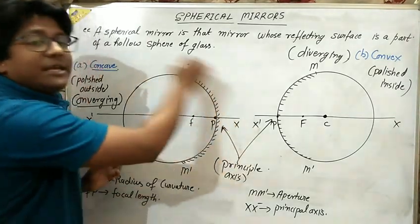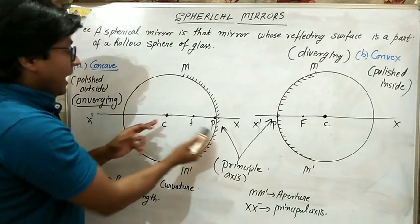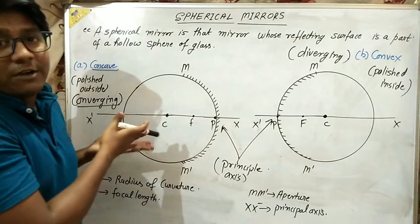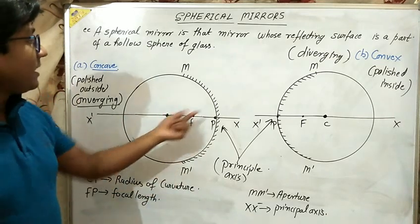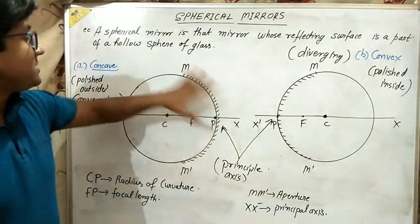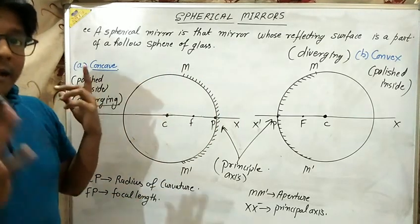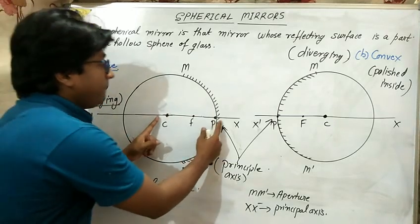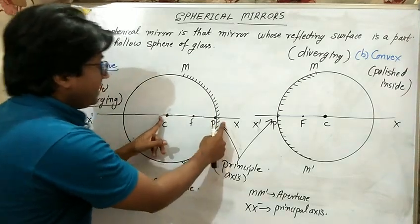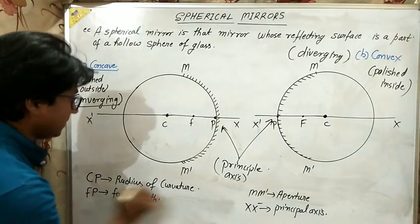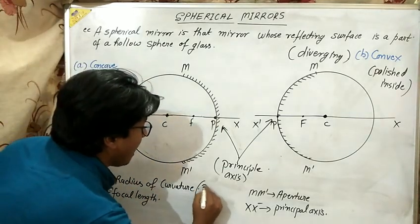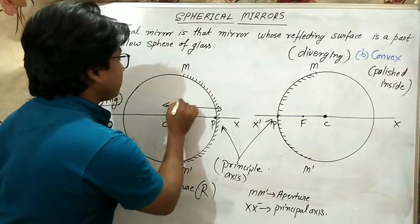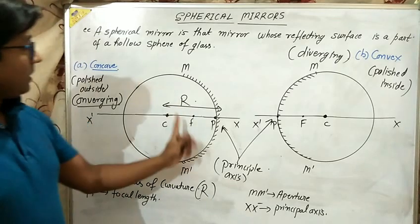You can see this circle — the center of this circle is C, which is the center of curvature. The center of curvature is always the center of the hollow sphere of which the mirror is a part. The distance from the pole to the center of curvature is called the radius of curvature, R.